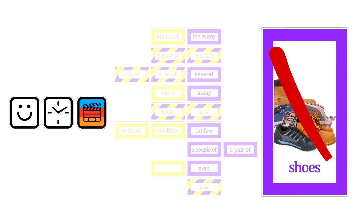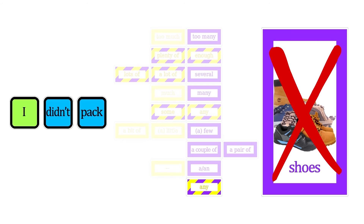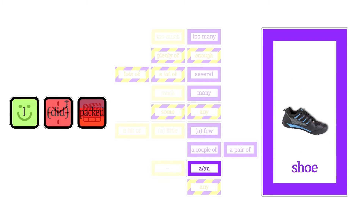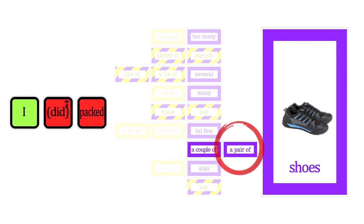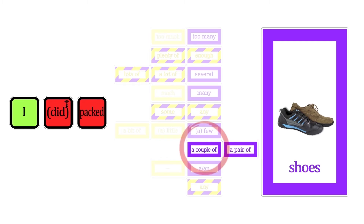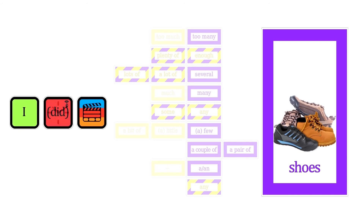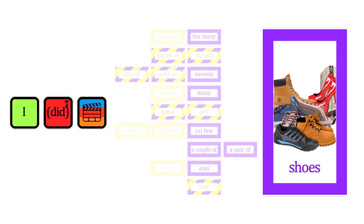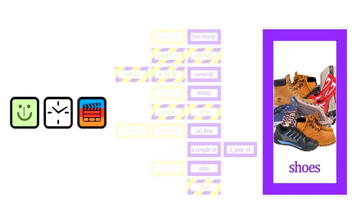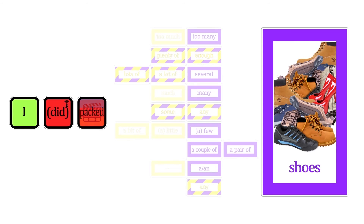I'll use shoes in the next example. I didn't pack any shoes. I packed a shoe. But if you really want to say you packed two matching shoes, we say I packed a pair of shoes. However, if we say I packed a couple of shoes, we mean we packed two different shoes. I packed a few shoes. I packed some shoes. I packed many shoes. I packed several shoes. I packed a lot of shoes, or lots of shoes. I packed enough shoes. I packed plenty of shoes. I packed too many shoes.